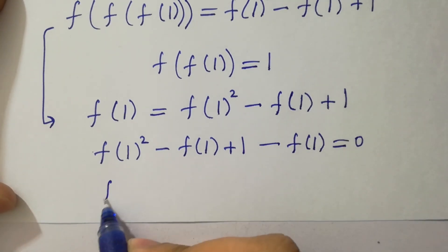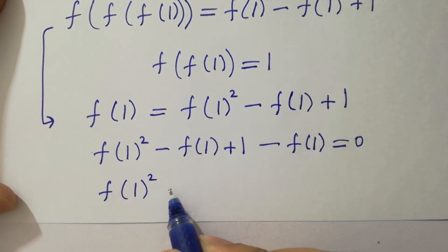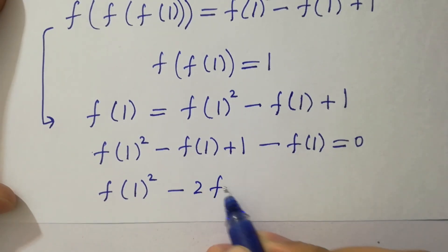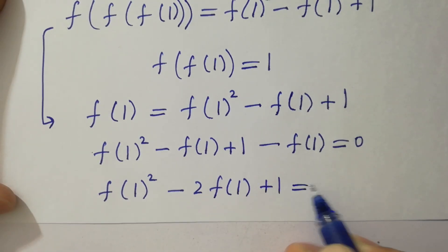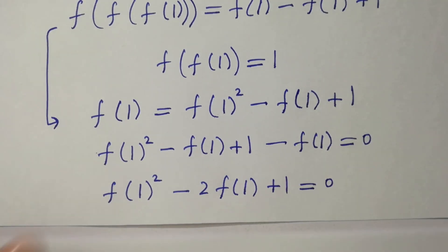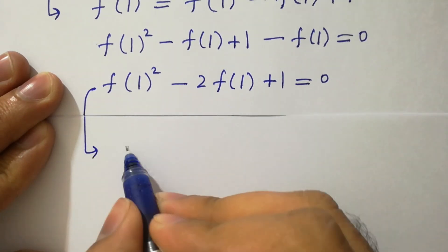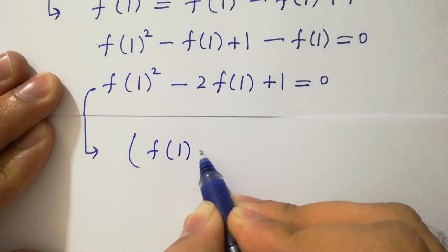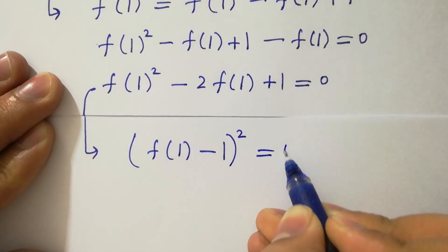We get f of 1 squared minus 2 times f of 1 plus 1 equals 0, which is the same as f of 1 minus 1, whole squared, equals 0.